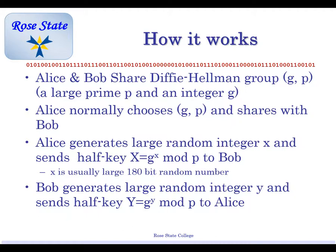Alice normally chooses G and P. Cameron, you can be Alice. I'll be Bob. Alice normally chooses G and P and shares it with Bob. Alice generates a large random number X. Then sends a half key, which is equal to G to the small X mod P.